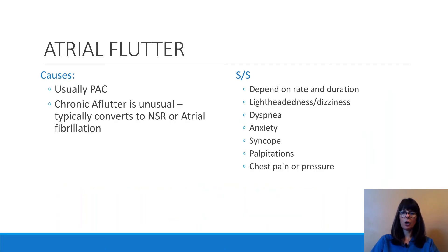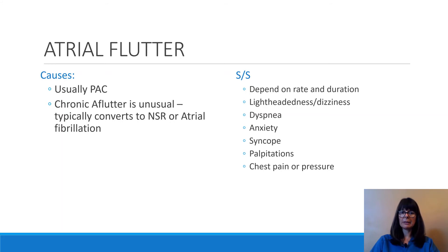What causes atrial flutter is usually PACs, or premature atrial contractions, discussed in a different video. Chronic atrial flutter is unusual because it typically converts either back to normal sinus rhythm or progresses to atrial fibrillation, which can be a chronic condition — also discussed in a different video.